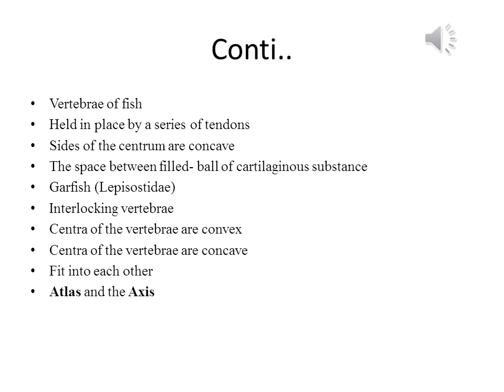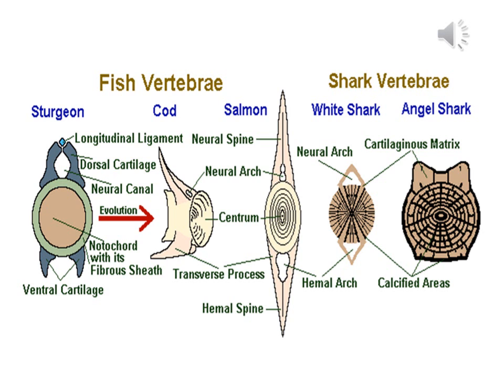The vertebrae that connect the skull to the spine are called the atlas and the axis, as in all vertebrates. In this picture, we can see a representative vertebra from three fish and two sharks, showing the evolution of the vertebrae from sturgeon to angel shark. The three fishes and two sharks include a sturgeon, a cod, and a salmon, a white shark and an angel shark. The sturgeon, the salmon and the shark are seen front-on in transverse view, while the cod is seen side-on in lateral view, to show that the processes and the spines they make up are not necessarily vertical.